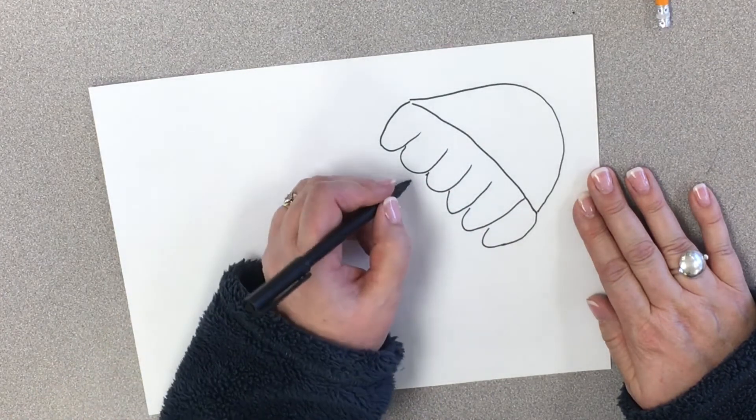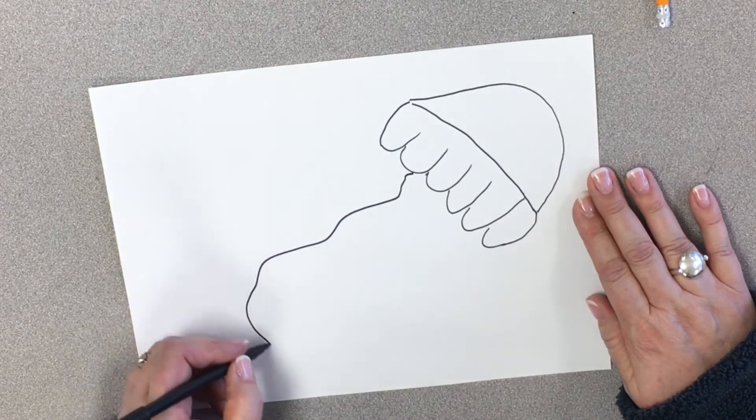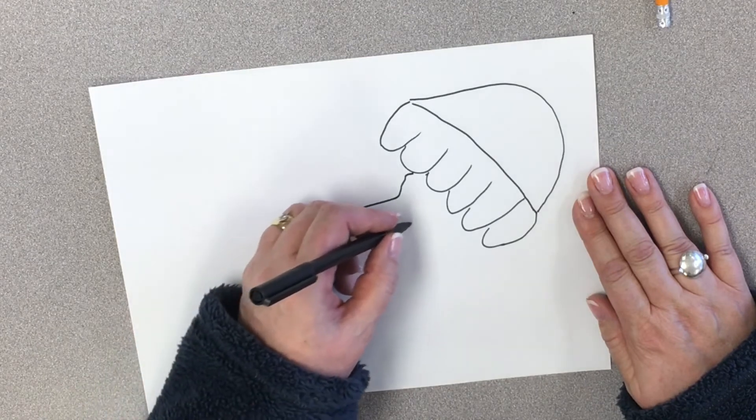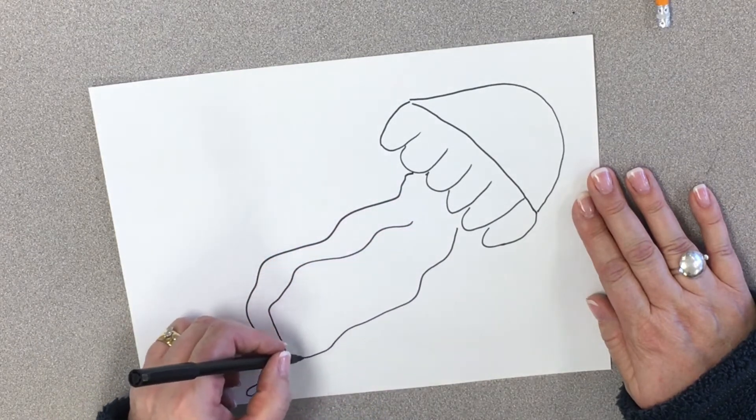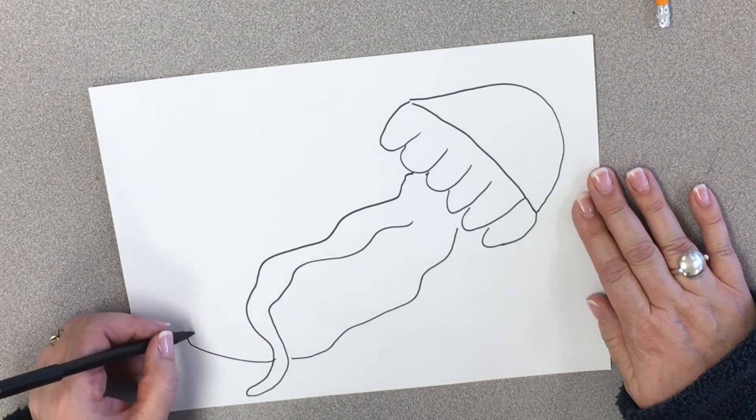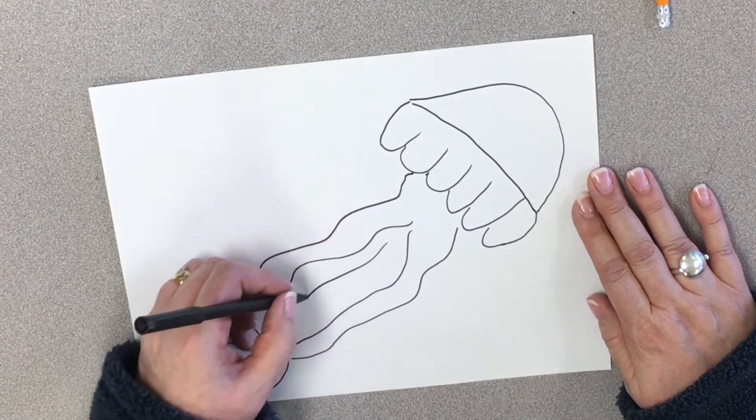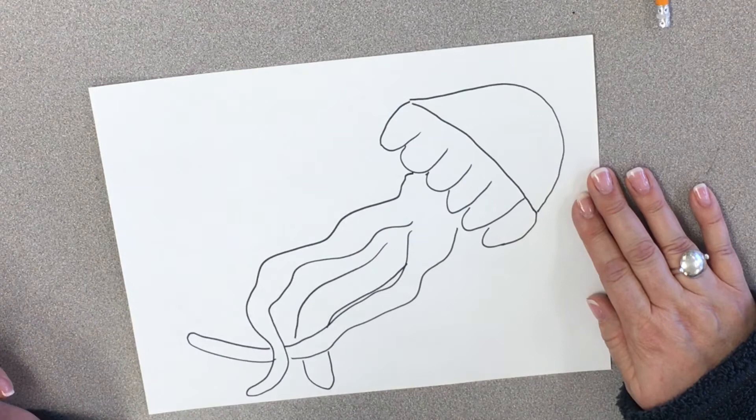There we go. So, then we're going to come in here and we're going to draw a thick kind of mass that's going to overlap or under this other one. There we go.